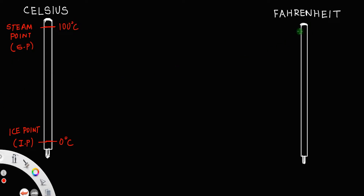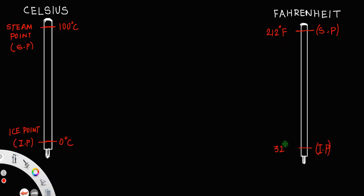Similarly, for the Fahrenheit scale, the steam point (SP) is equal to 212 degrees Fahrenheit, and the ice point (IP) is equal to 32 degrees Fahrenheit.